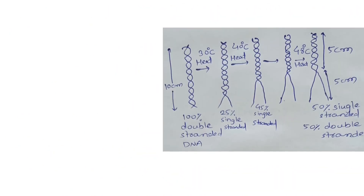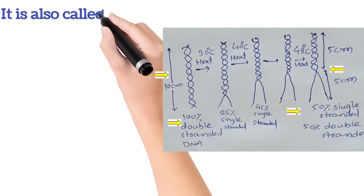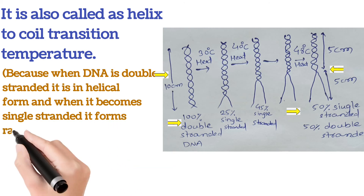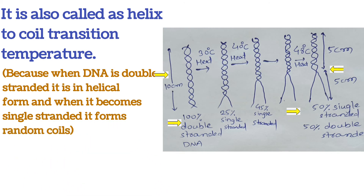Look at the figure — you can see double-stranded DNA in the first picture. The blue arrow represents the full DNA length, say 10 centimeters. When heat is applied, DNA starts to melt: at 30°C, 25 percent is melted; at 40°C, 45 percent is melted into single-stranded form; and at 48°C, 50 percent of the DNA is in single-stranded form. So 48°C is the Tm of this DNA — 50 percent remains double-stranded and 50 percent is single-stranded.